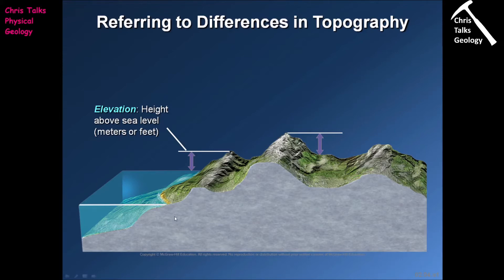In terms of sea level, we don't just pick any time of day to take our measurements. We use what's referred to as mean sea level. The problem is that sea level rises and falls every day depending on the tides, so we take an average of sea level and use that as our starting height. Because it's our datum, we give it the value zero, and elevation is therefore the difference in height between sea level and our location.